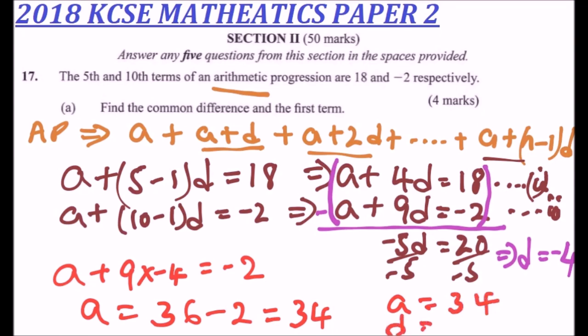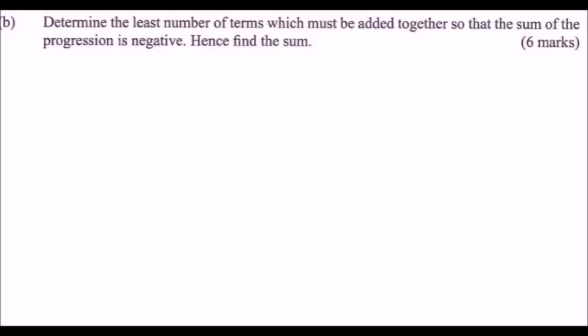So our d equals minus 4 and a equals 34, and with that you earn yourself 4 marks. Part b asks us to determine the least number of terms which must be added together so that the sum of the progression is negative, and hence find the sum. For the sum to be negative, this sum must be less than zero.